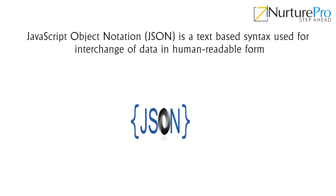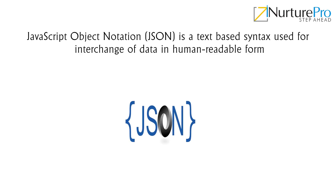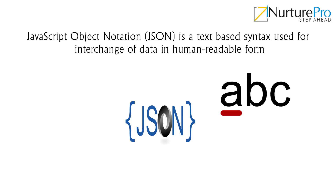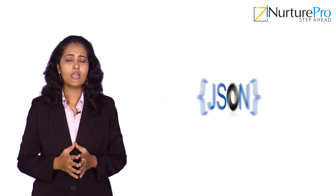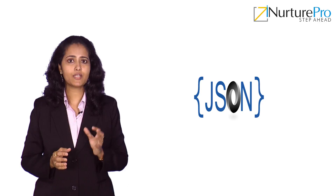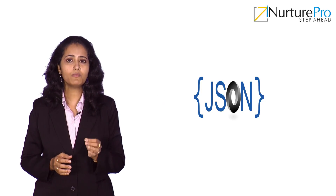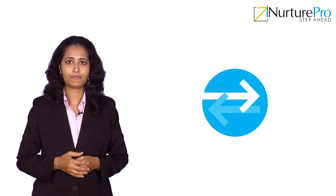JavaScript Object Notation — JSON — is a text-based syntax used for interchange of data in human readable form. Usually JSON is used when data is sent from a server to a web page. JSON is a way to store information in an organized and easy to access manner.